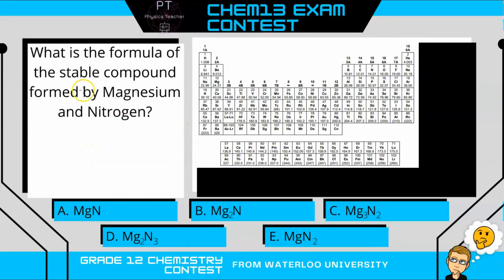All right, so we want to form the stable compound with magnesium and nitrogen. You do get a periodic table on the contest, so you don't need to have these memorized, although you might already have magnesium and nitrogen memorized because they are fairly common and used quite often in high school chemistry. So here we have magnesium and nitrogen.